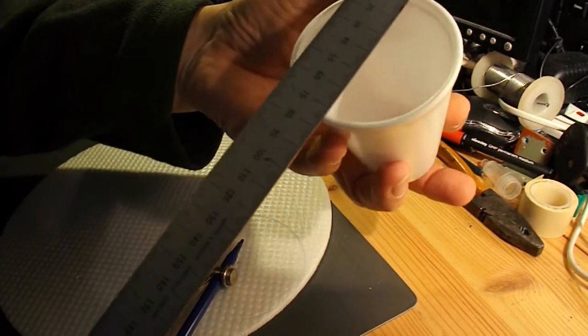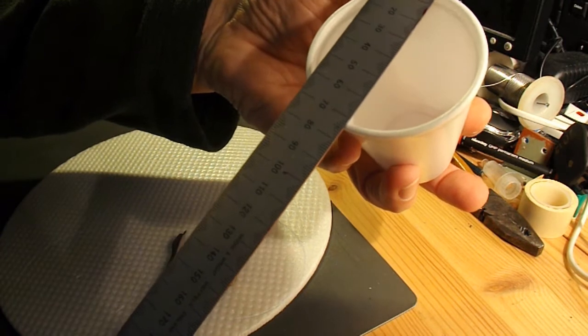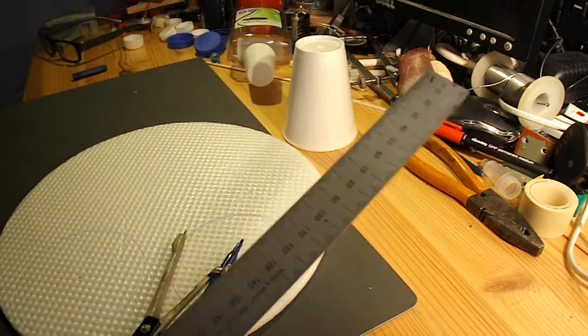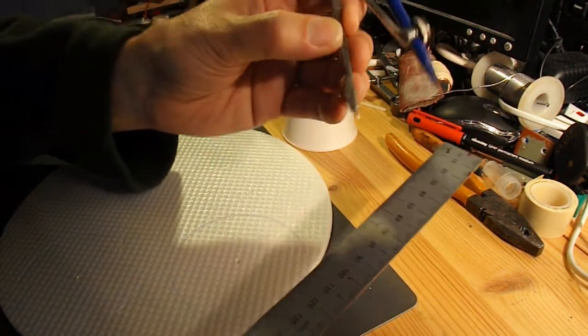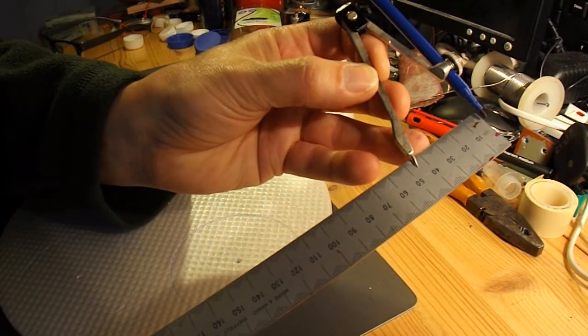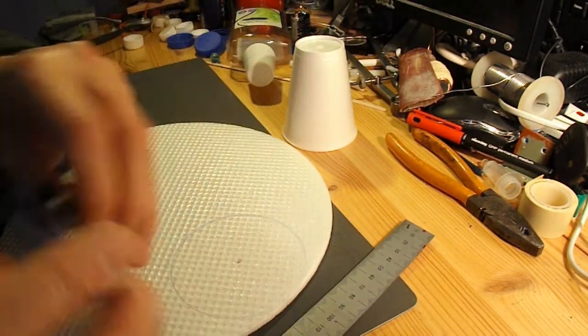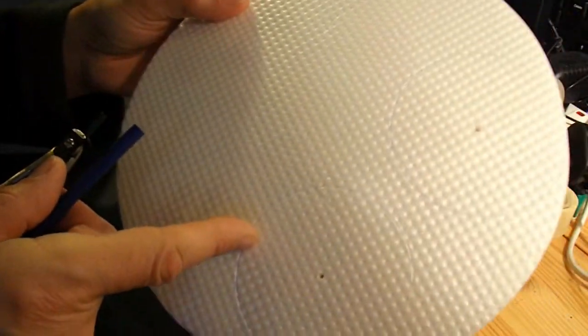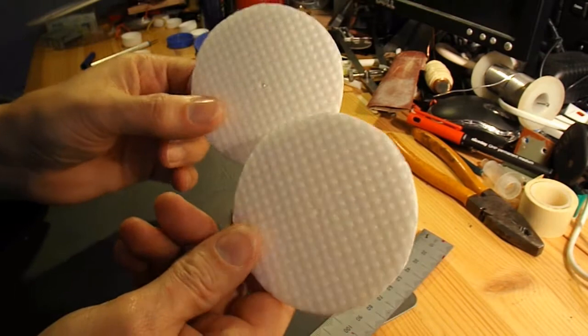I've measured my polystyrene cup and it looks like it's about 75mm diameter at the wider end. So I've set my compass to 45mm and drawn a circle, in fact I've drawn two circles on my polystyrene pizza tray. So that's my two wheels.